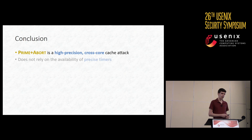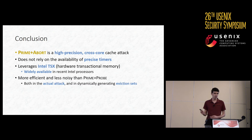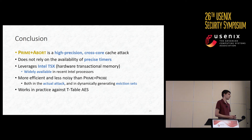In conclusion, Prime and Abort is a high-precision cross-core cache attack which does not rely on the availability or accuracy of precise timers. Instead it leverages Intel TSX, which is widely available in recent Intel processors, both server and consumer grade. Prime and Abort is more efficient and less noisy than Prime and Probe both in the actual attack and in the pre-attack portion where we generate eviction sets. Finally, it works in practice against T-table AES. Thank you for your time and I'll be glad to take any questions.